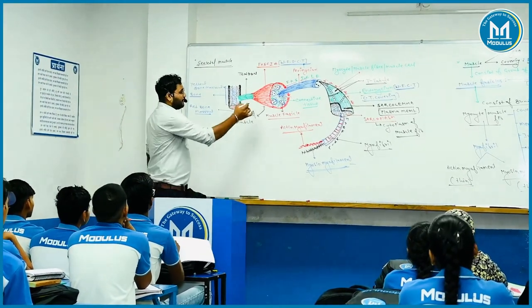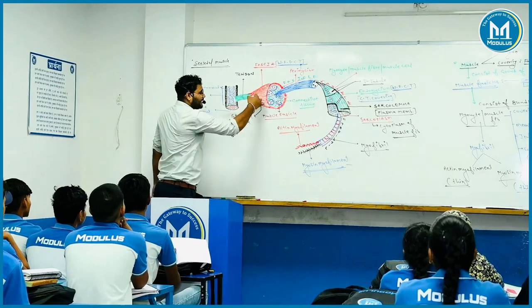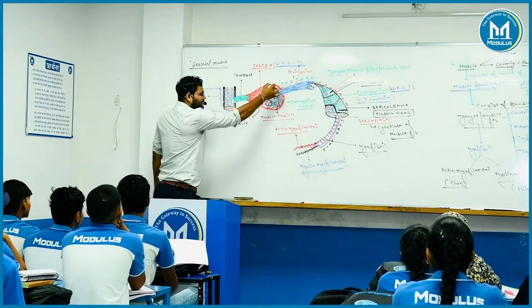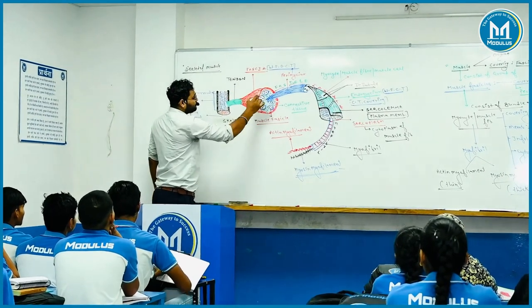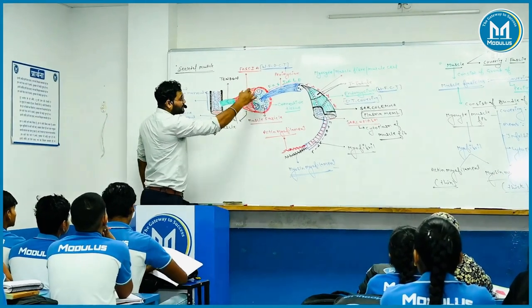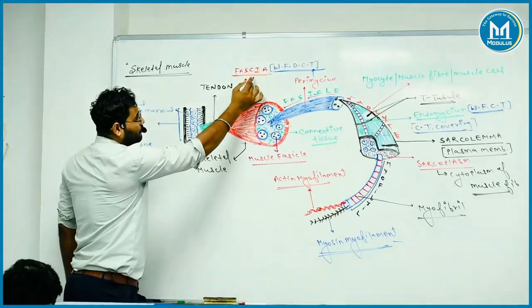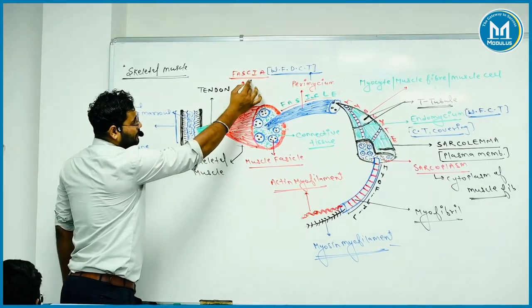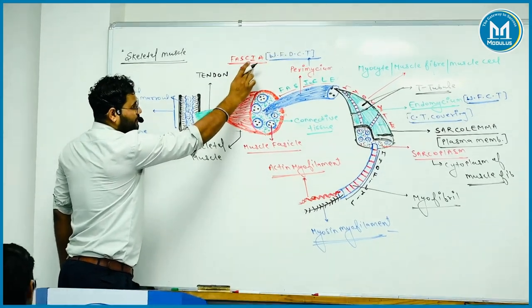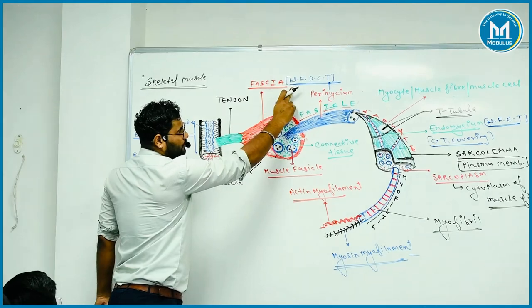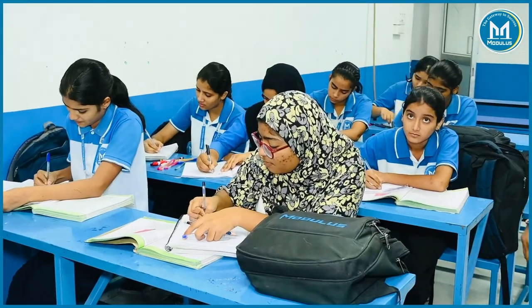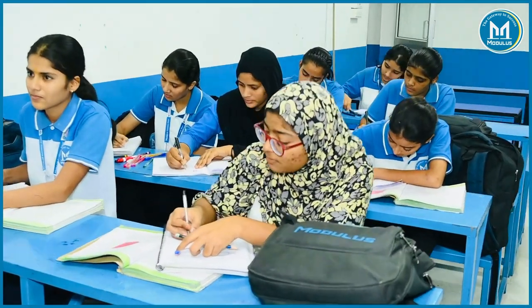Now let's see. This is the skeletal muscle — we are looking at the skeletal muscle section. What will the covering of the skeletal muscle be? Fascia. Fascia is made by white fibrous dense connective tissue.